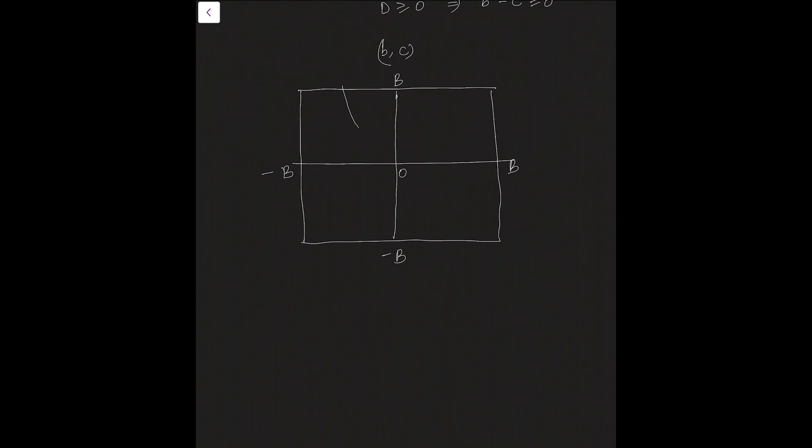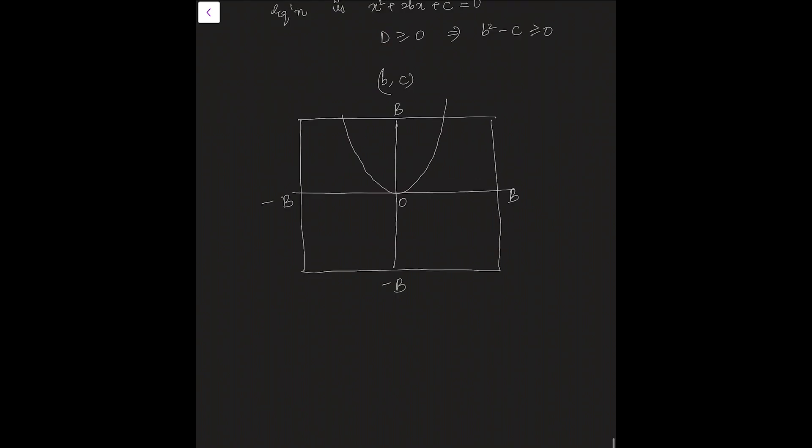So, we will draw the parabola b squared equals to c and inside the parabola b squared minus c is negative and outside the parabola b squared minus c is positive.